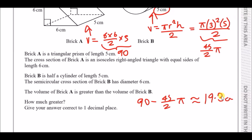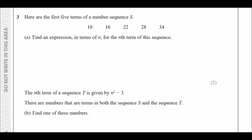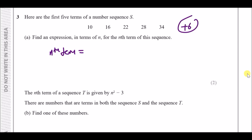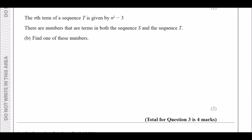Number three: here are the first five terms of sequence S. Find an expression in terms of n for the nth term. Looking at the sequence, it goes up in sixes. A nice trick: it goes up in 6s so start with 6n, then look at the first term — circle it and go one back: subtract 6 from the first term to get +4. So the nth term is 6n + 4.